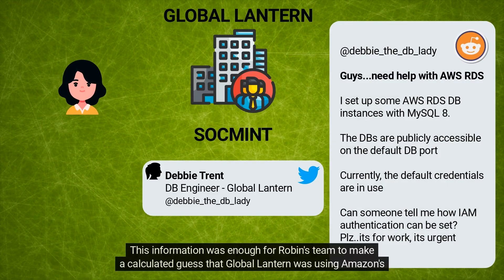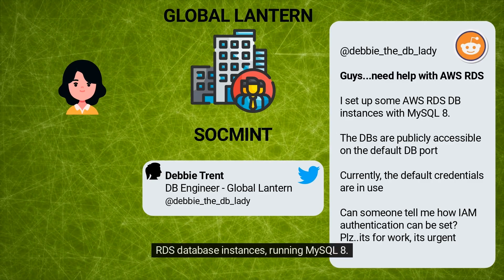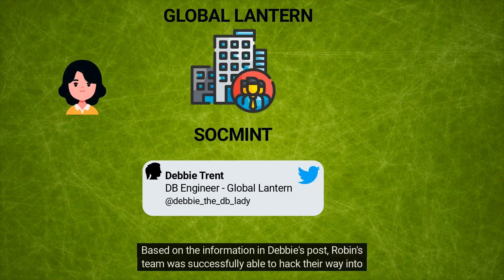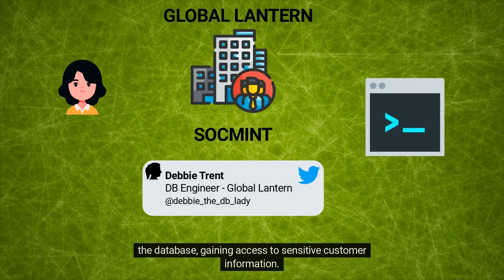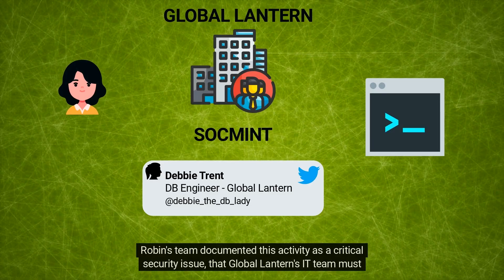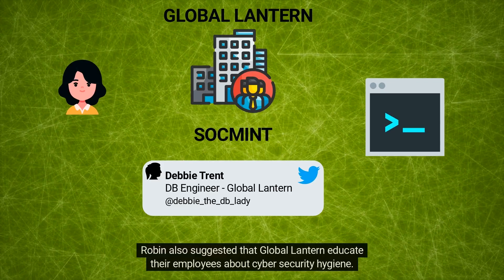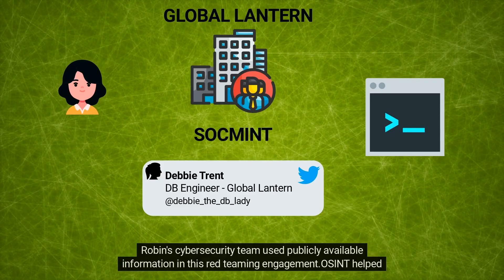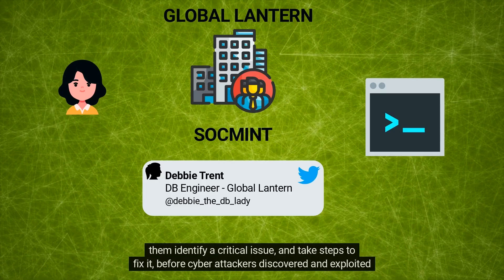This information was enough for Robin's team to make a calculated guess that Global Lantern was using Amazon's RDS database instances running MySQL 8. Based on the information in Debbie's post, Robin's team was successfully able to hack their way into the database, gaining access to sensitive customer information. Robin's team documented this as a critical security issue that Global Lantern's IT team must fix immediately. Robin also suggested that Global Lantern educate their employees about cybersecurity hygiene.